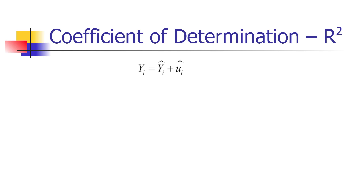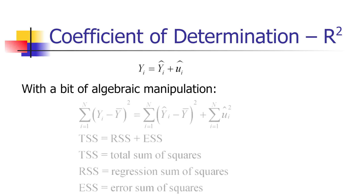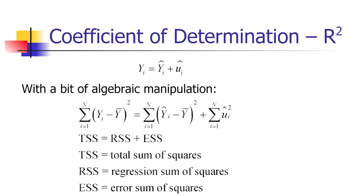The observed data point can be written as a predicted data point, once you've estimated the equation, plus the error term. So the error term is the difference between the true value that we observe, y sub i, and the value predicted by a regression equation. With a little bit of algebra, we subtract y-bar from both sides of this equation, square both sides, and add that up over all values of i from i equals 1 to n. This is done in the textbook if you want to check the algebraic steps, but what we end up with is this equation.